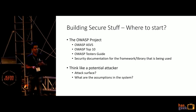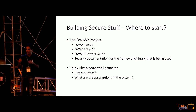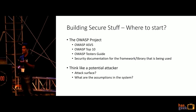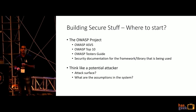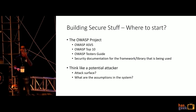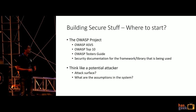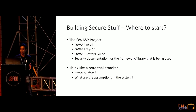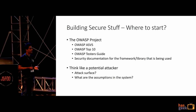A common question: where do you start if you want to look at application security? The OWASP project is a very good resource — they have the OWASP ASVS, the OWASP Top Ten — a list of most common vulnerabilities — and a testers guide if you want to get active with security testing. The security documentation for your framework and library is also very helpful. Start thinking like a potential attacker: look at the attack surface your application provides and what assumptions are already made in the system.